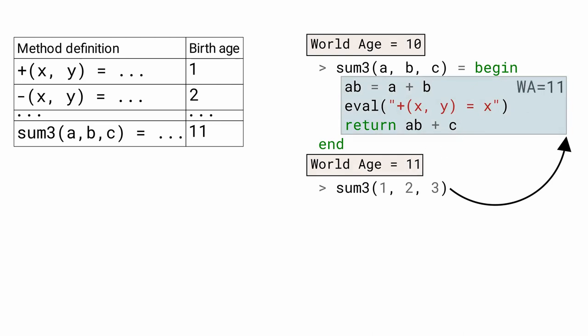This value is then used to resolve all nested goals within the top level one. Namely, only methods that were born by the beginning of the top level goal are visible within it. In this example, visible methods have the maximum birth age of 11.